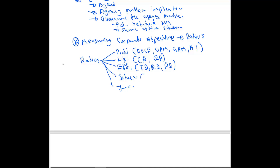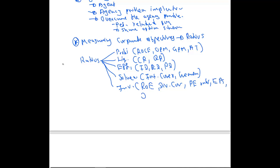For solvency ratios you can use interest cover and gearing. For investor ratios you can use return on equity, dividend cover, PE ratio, earnings per share, dividend yield, and earnings yield. These are ratios you can use to measure whether a company is achieving its corporate objectives with regard to investors.